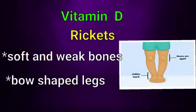Vitamin D deficiency is called rickets in children and osteomalacia in others. The symptoms are soft and weak bones and bow-shaped legs. Bowlegs is when the legs curve outwards at the knees while the feet and ankles touch, as shown in the picture.